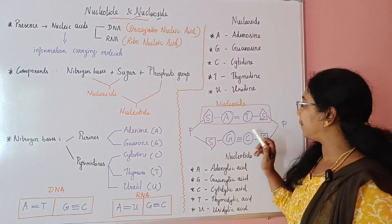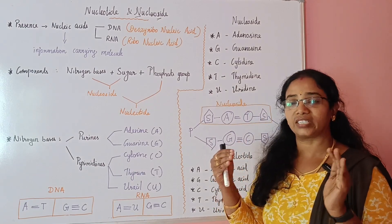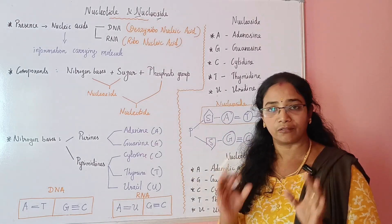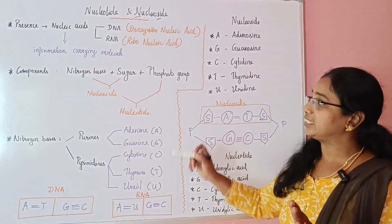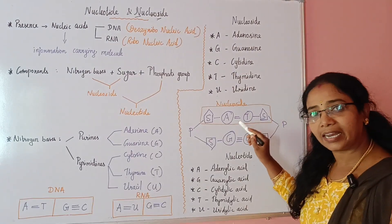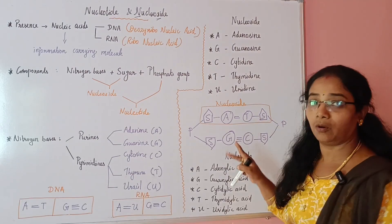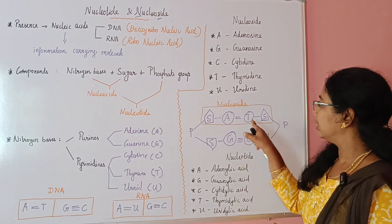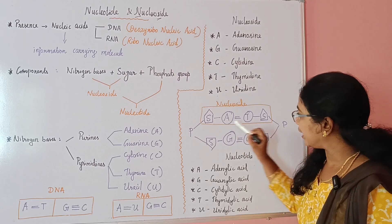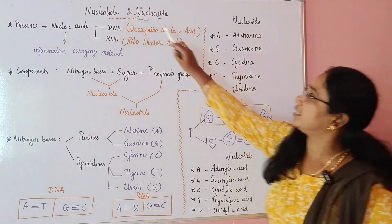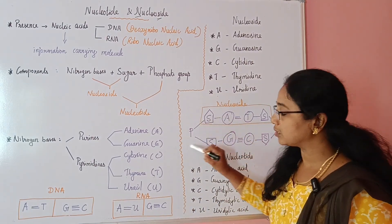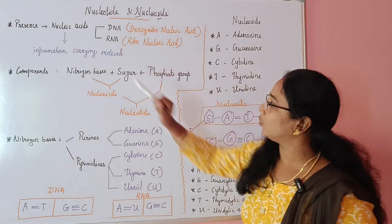So this combination — nitrogen base joined with sugar — is nucleoside. Why do we call it nucleotide? Because when a phosphate group is attached to the nucleoside, it becomes a nucleotide. Nitrogen base plus sugar equals nucleoside; nucleoside plus phosphate group equals nucleotide.